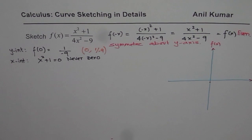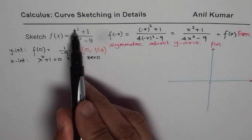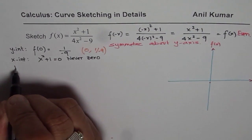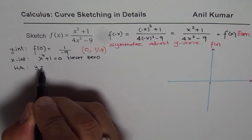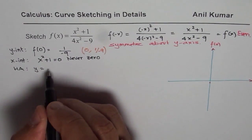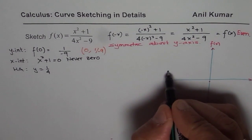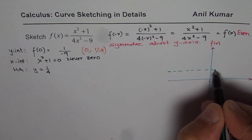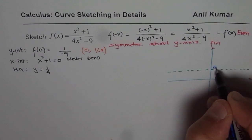Let us find horizontal and vertical asymptotes. Since the degree of the numerator and denominator is the same, we expect a horizontal asymptote. The horizontal asymptote is y equals the ratio of the leading coefficients, which is 1 over 4. So y = 1/4 is the horizontal asymptote. Let me sketch a line at y = 1/4.